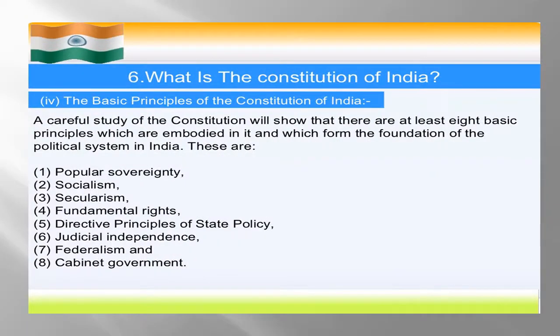The basic principles of the Constitution of India — a careful study of the Constitution will show that there are at least 8 basic principles which are embodied in it and which form the foundation of the political system of India. India's political system's foundation depends on these 8 points: Popular Sovereignty, Socialism, Secularism, Fundamental Rights, Directive Principles of State Policy, Judicial Independence, Federalism, and Cabinet Government.